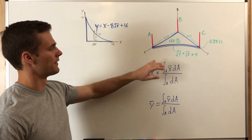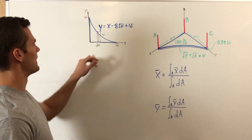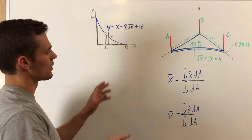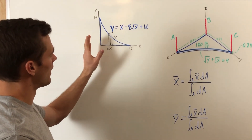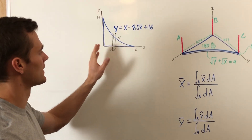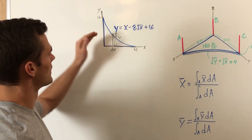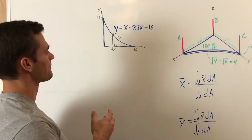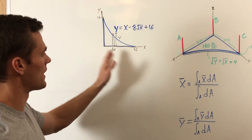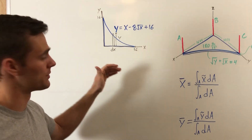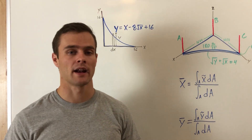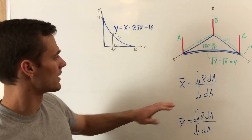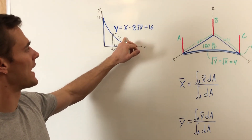Here we have our curve bounded by each of the axes. What we're doing is adding up a bunch of differential slices of this area. These differential slices can be either vertical or horizontal, and it depends on whether we're integrating over the x-axis or the y-axis. For vertical strips you're integrating over x, and for horizontal strips you're integrating over y. It depends on how your function is given — one direction may be easier to integrate than the other.